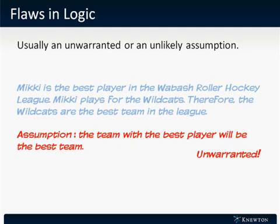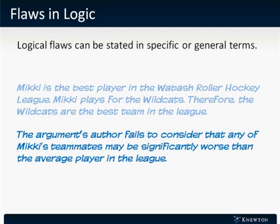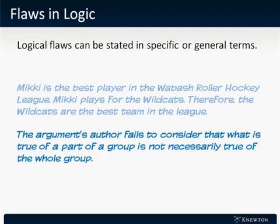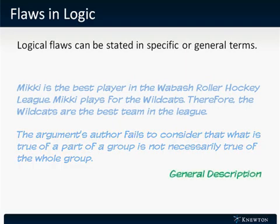We can state it in general or specific terms. We can say the argument's author fails to consider that any of Mickey's teammates may be significantly worse than the average player in the league — that's a specific way to point out the flaw. Or, we could say the argument's author fails to consider that what is true of part of a group is not necessarily true of the whole group. That's a more general description of this argument.